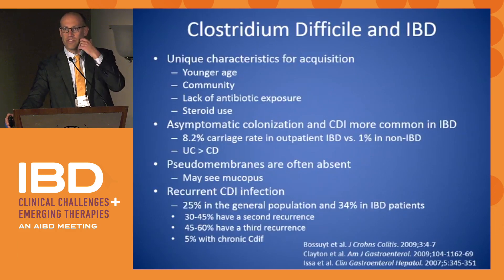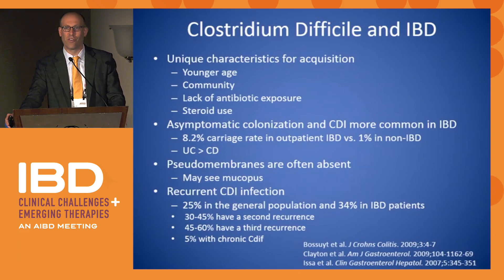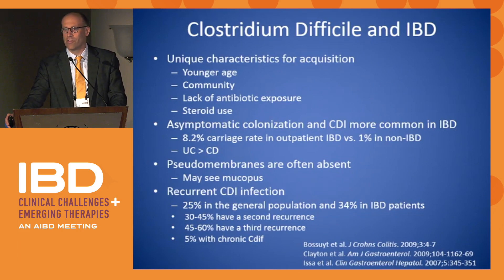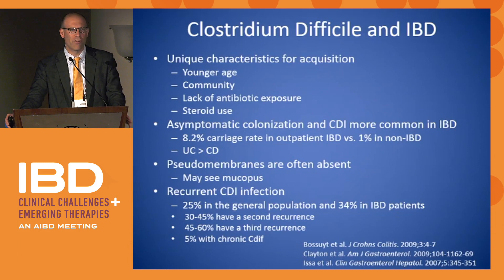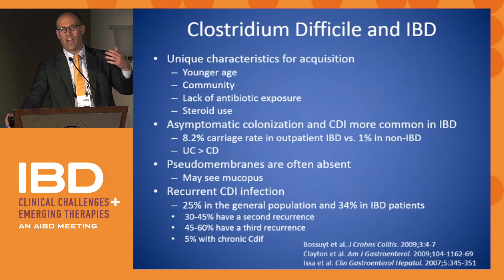How does C. diff present in IBD versus non-IBD patients? Usually with IBD, patients are going to be younger, more likely community-acquired than antibiotic-associated. You're going to see more steroid use. On colonoscopy, where usually with C. diff you see pseudomembranes, with IBD patients you don't see those pseudomembranes often. Over 8% of IBD patients have been shown to be colonized with C. diff — much lower than the general population. One study shows significantly higher recurrence rates: 34% in IBD patients versus 25% in the general population. And with one recurrence, you're more likely to have a second and third recurrence.